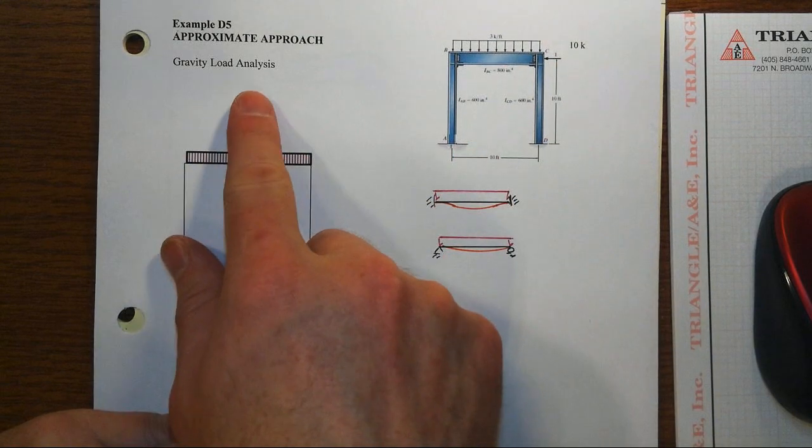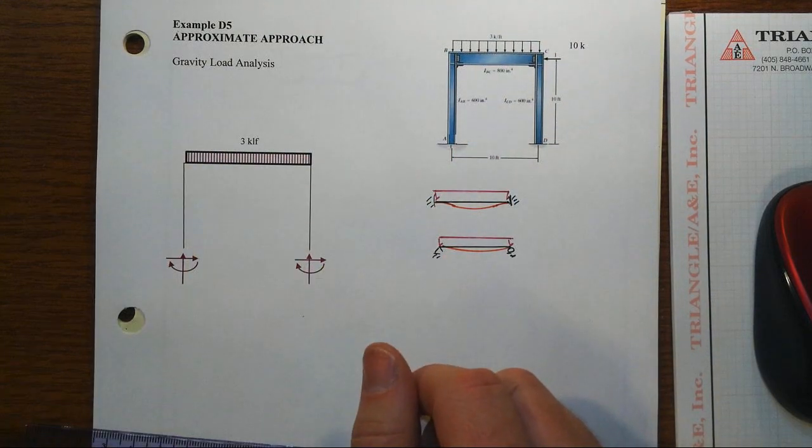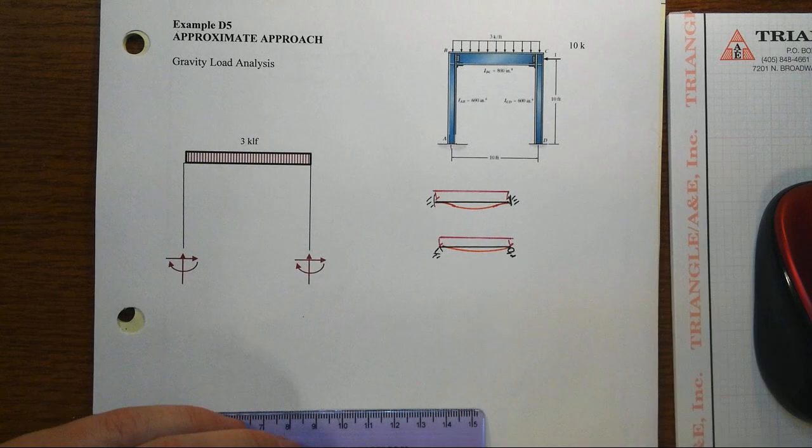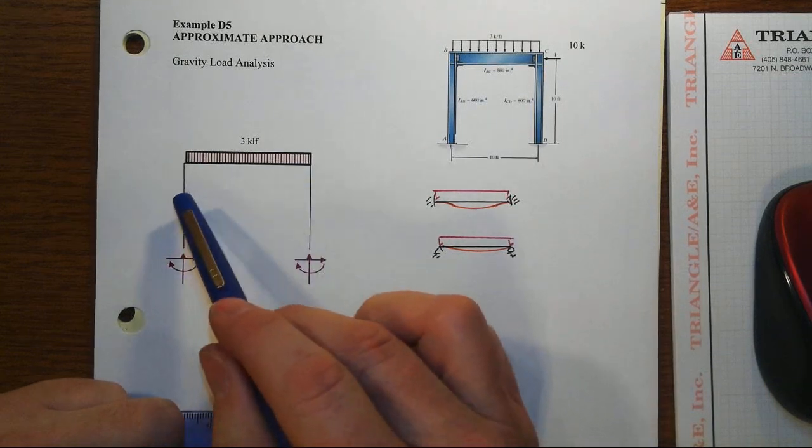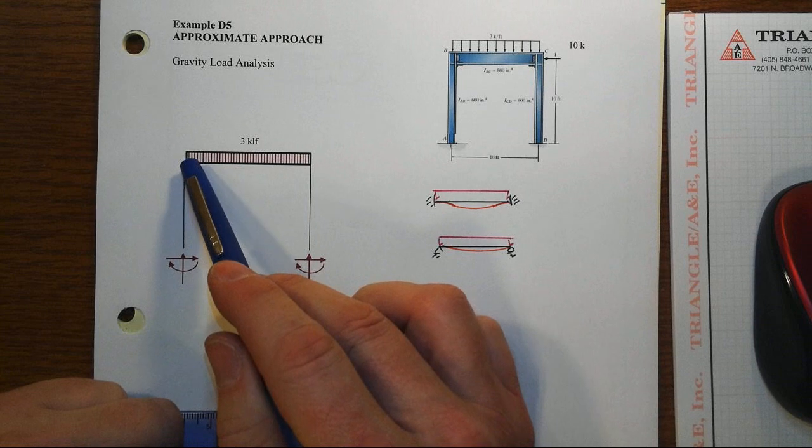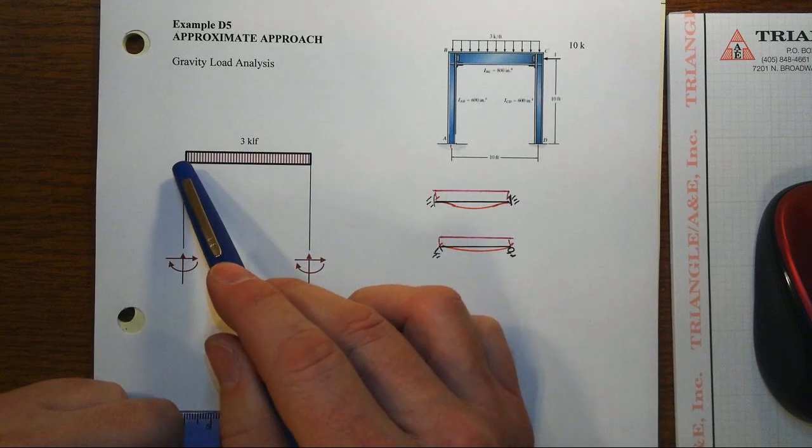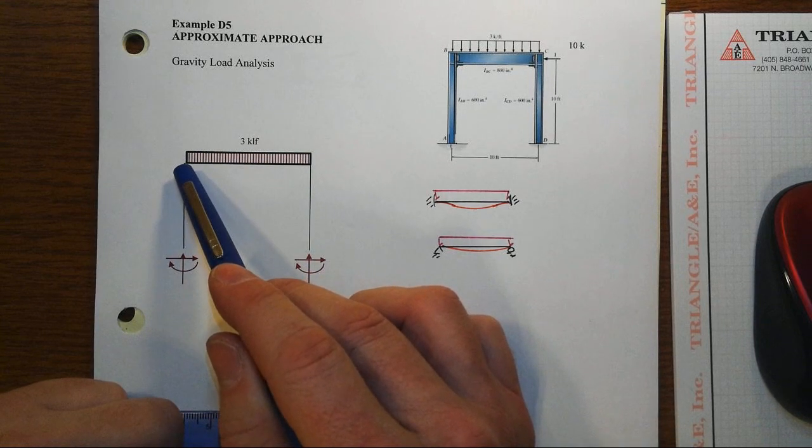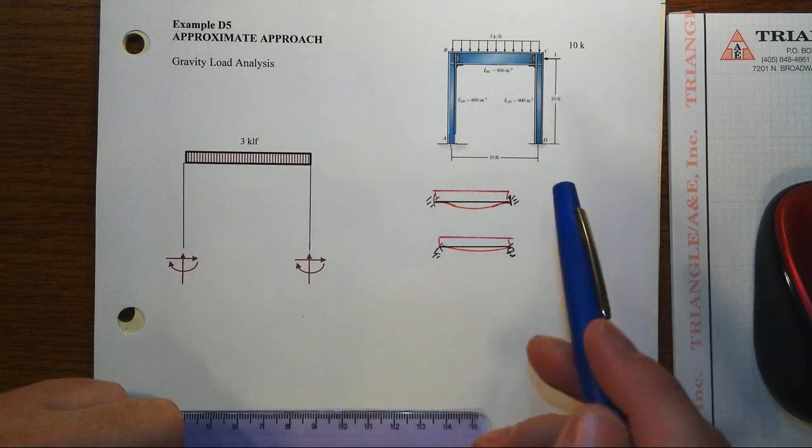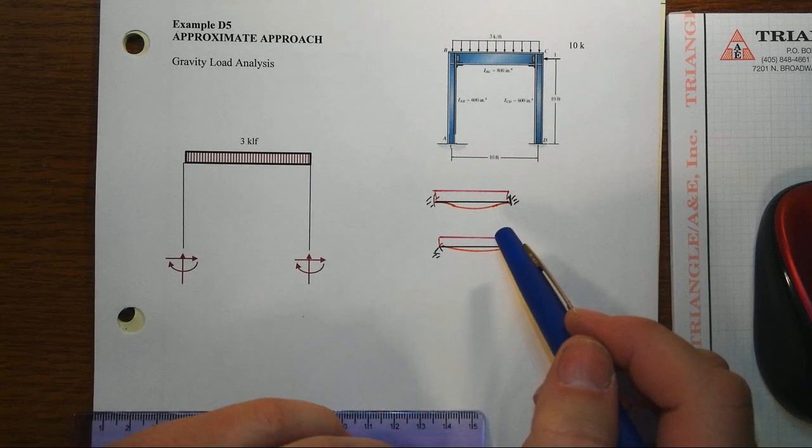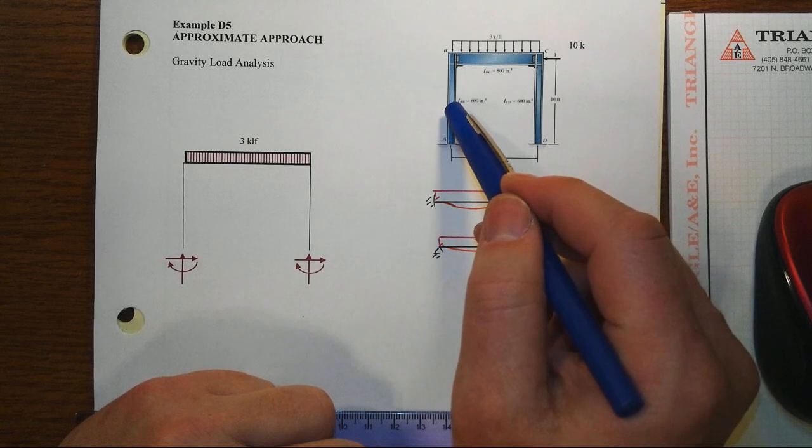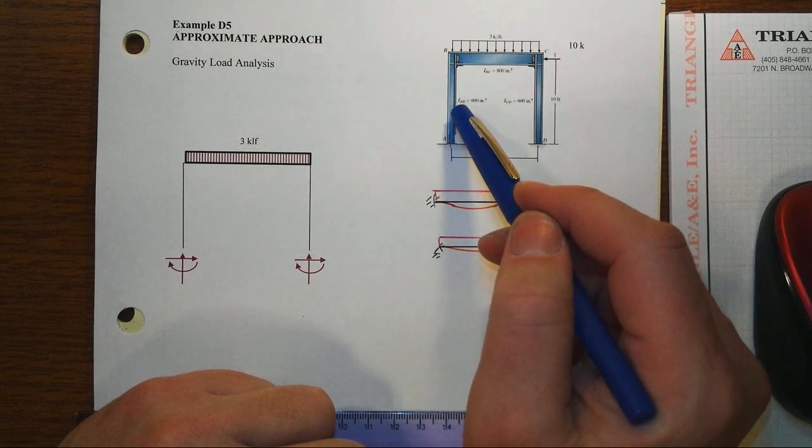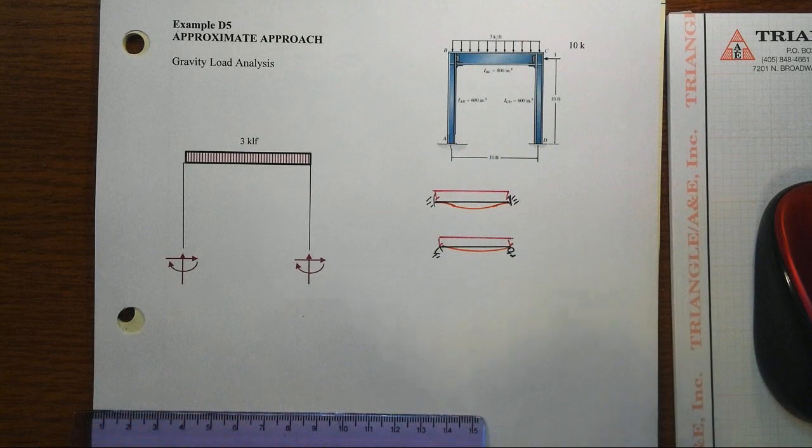We're going to focus just on gravity load analysis and an approximate approach. It'll be useful in thinking about what the extremes of the beam situation might be. It's rigidly attached to the columns, so that means when it attempts to want to rotate at the ends, it's going to be partially restrained by the flexural stiffness of the columns. So then a key question becomes, do we have columns that look relatively stiff compared to the beam or the other way around?